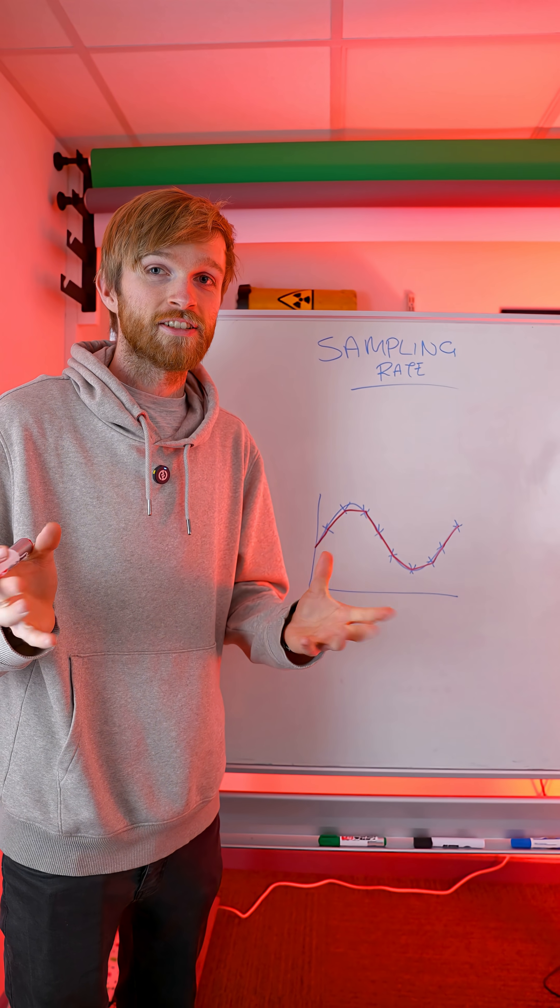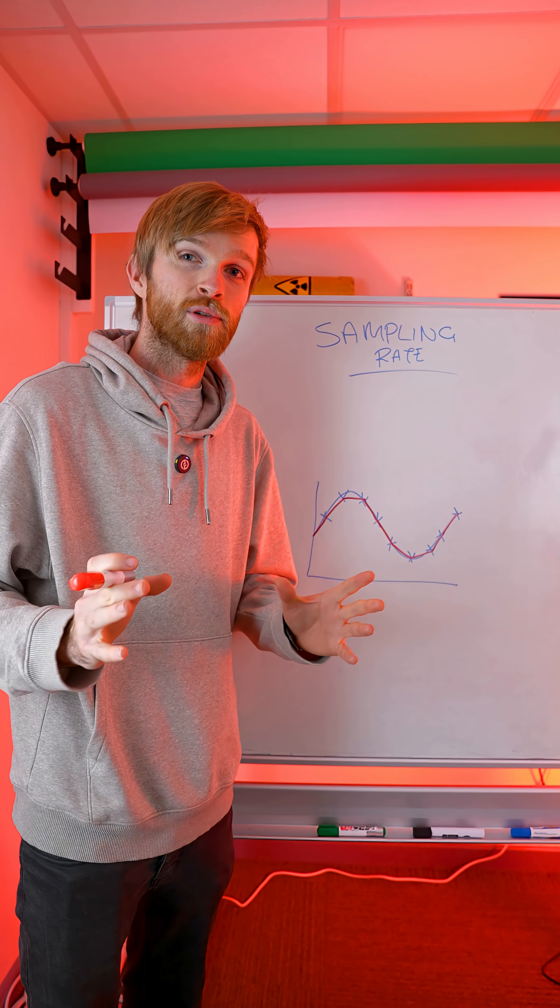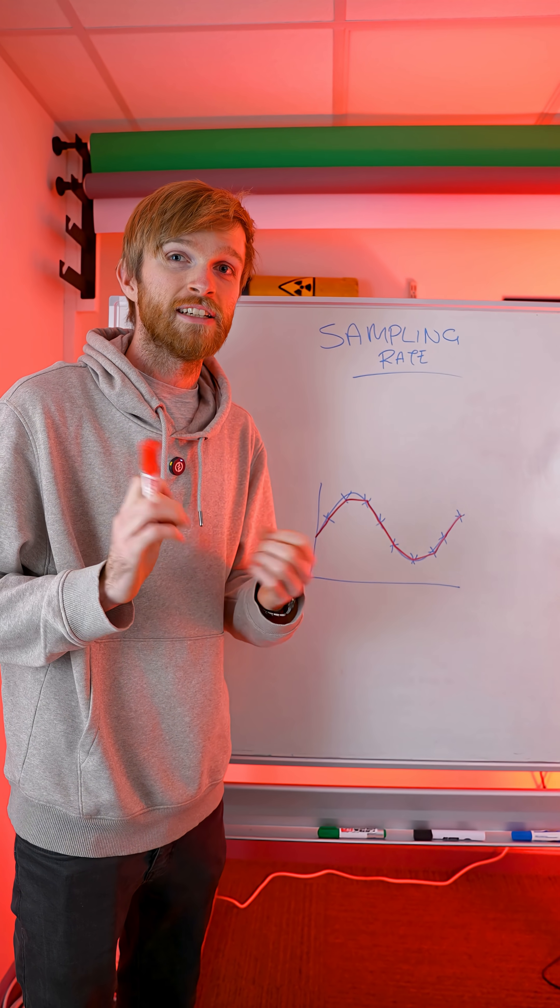A higher sampling rate on your oscilloscope will see more points in a small amount of time, so it's better at seeing those really small signals.